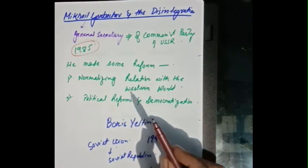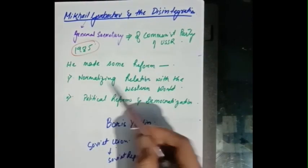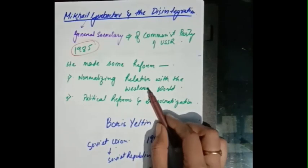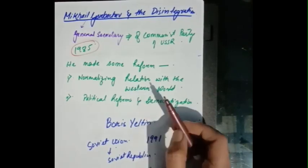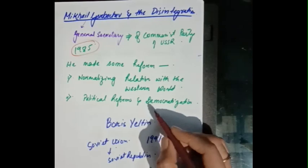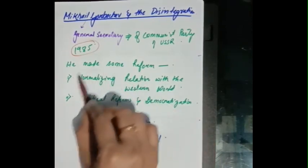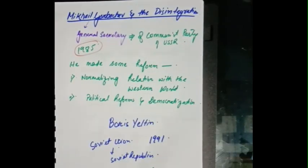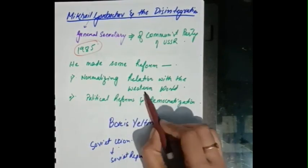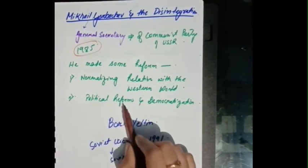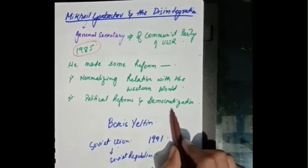Gorbachev promised to bring changes to the system and to make it work for the welfare of the people. He introduced two key reforms: normalizing relations with the Western world, and political reforms and democratization.